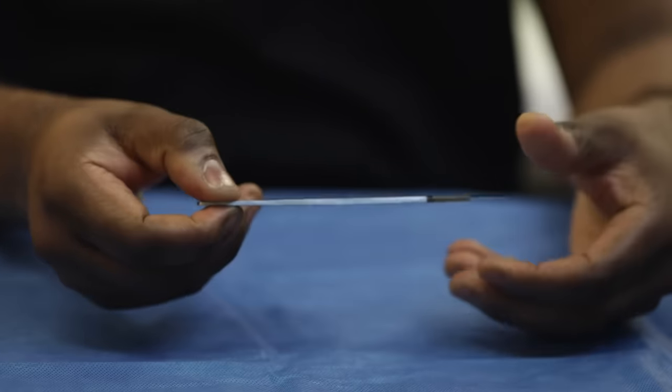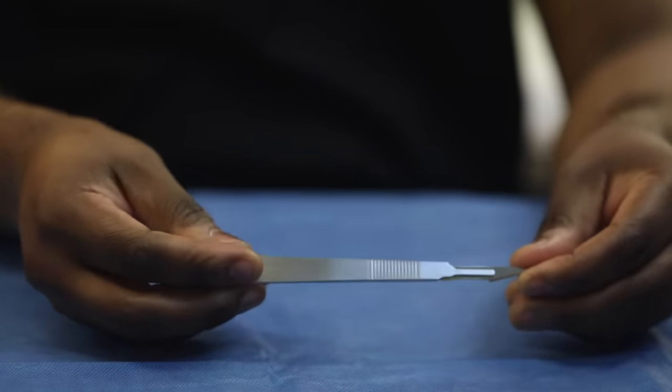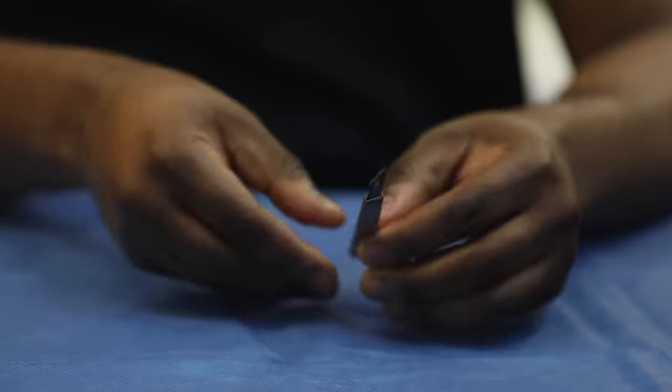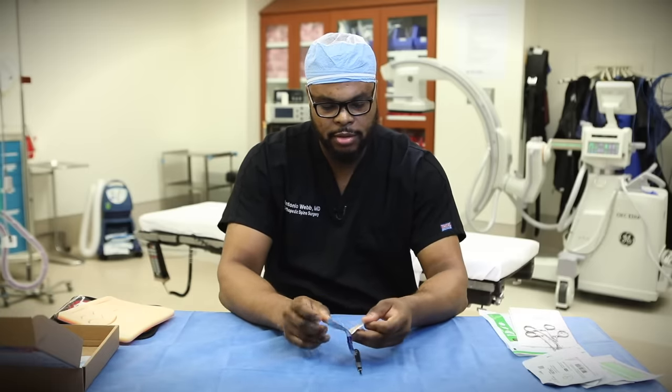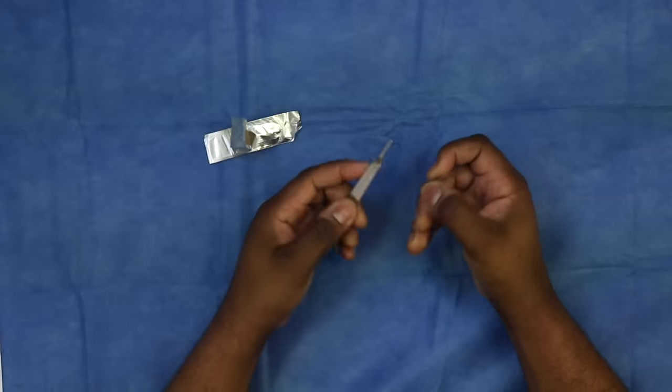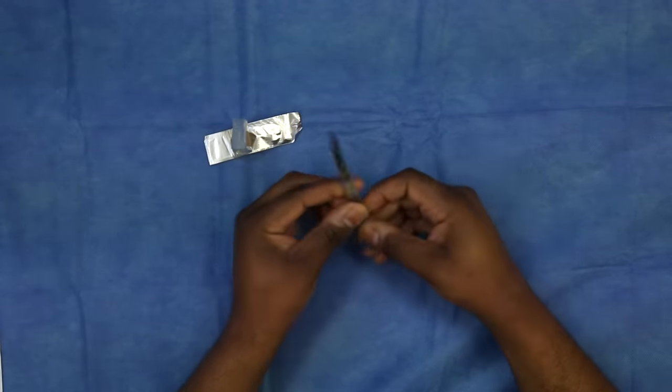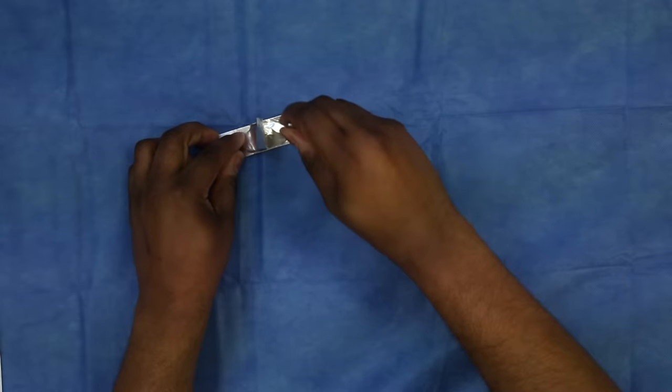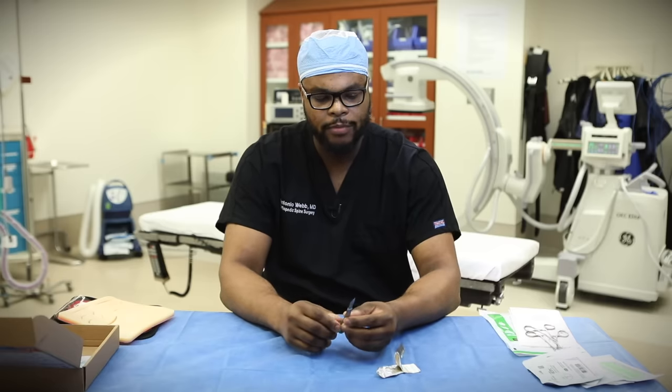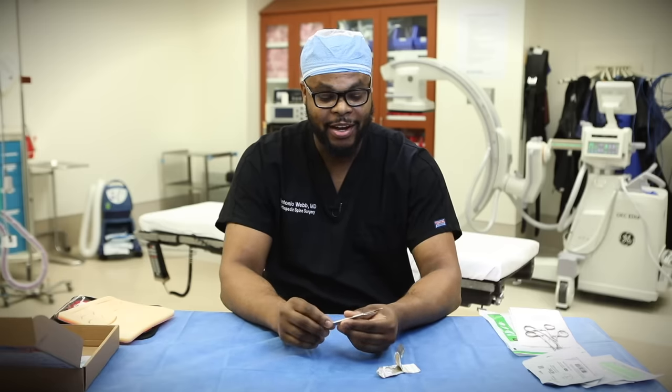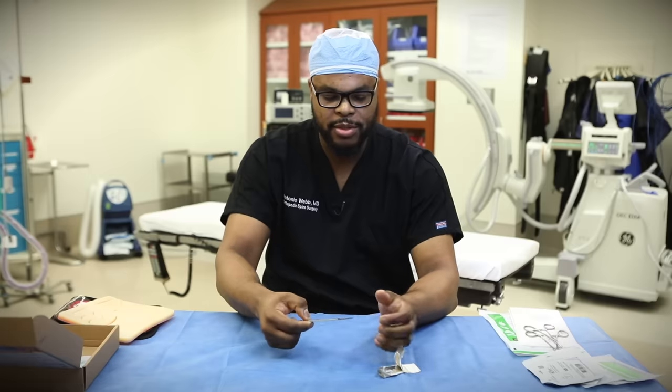The third thing that's in this kit is a blade. They actually come with different blades that you can use to cut the skin. This blade here can be attached to this instrument. You have to be very careful. This is pretty sharp. So this goes on like this here, and you should be careful. You want to lock it in place.